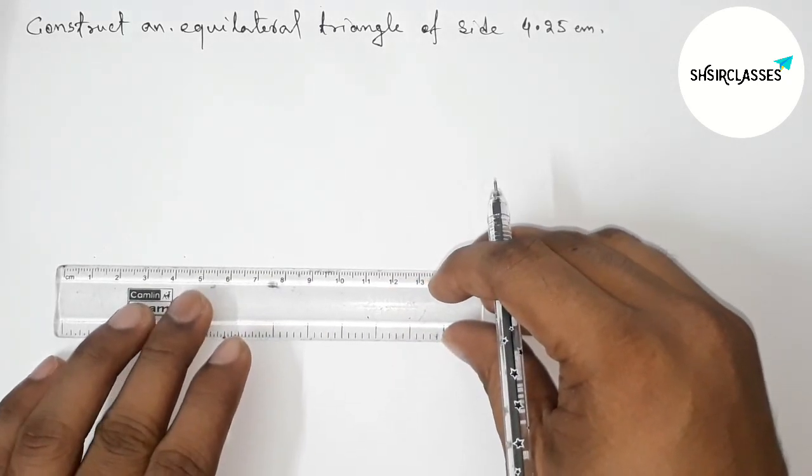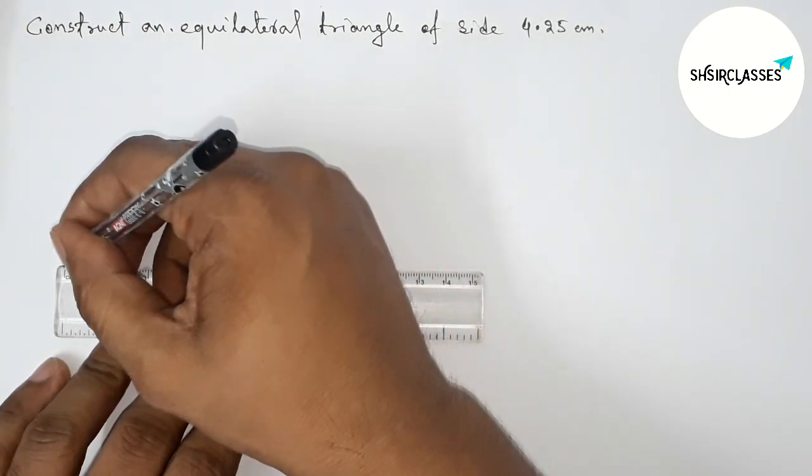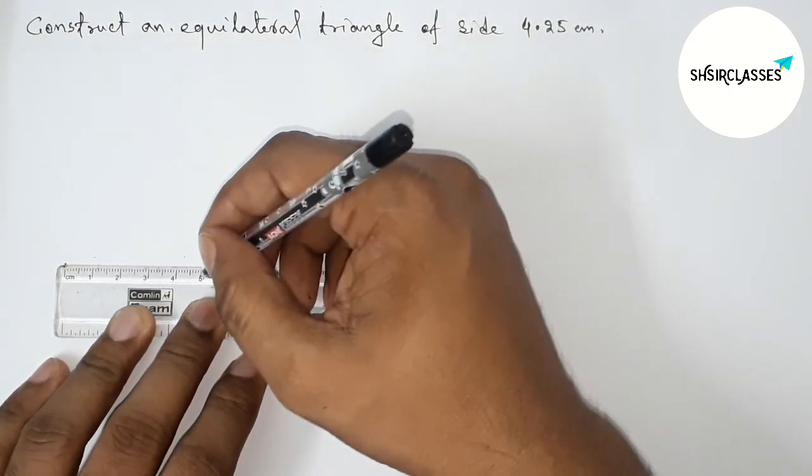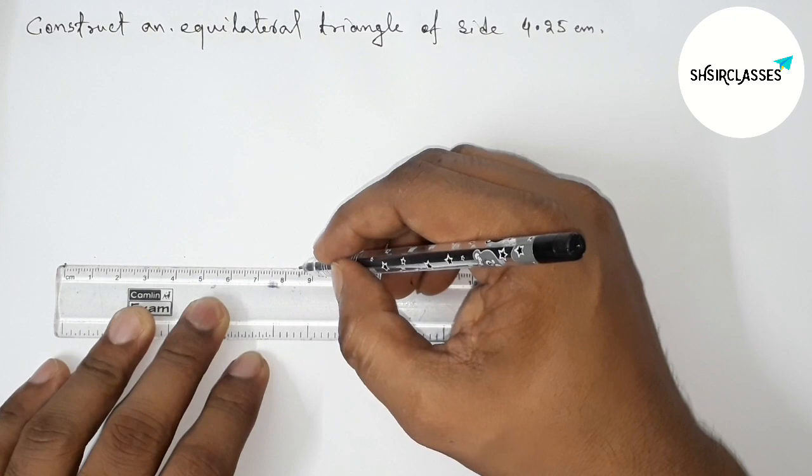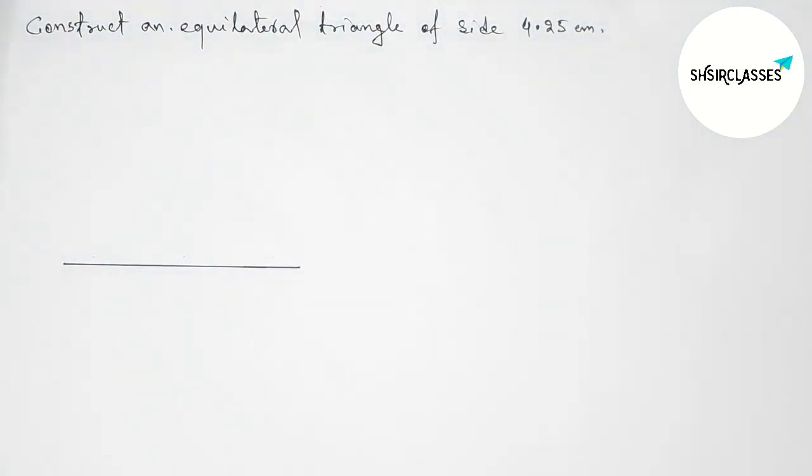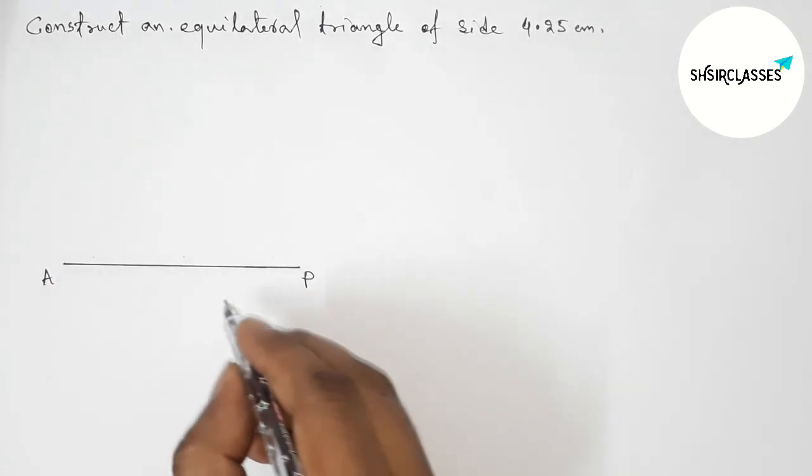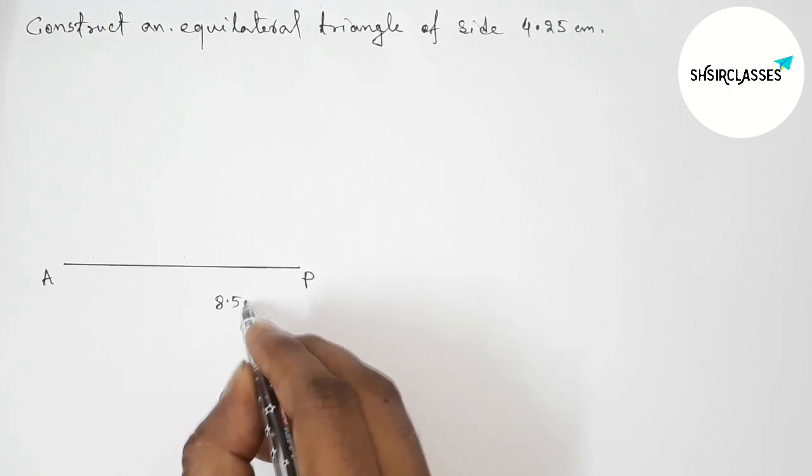First of all, let us draw here a line segment of length 8.5 centimeter. Now taking here point A and here P, so AP that is 8.5 centimeter line segment.